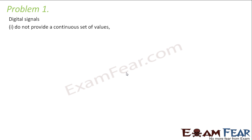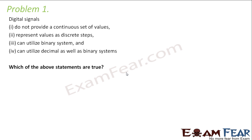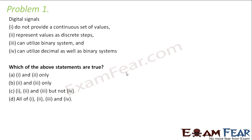Digital signals do not provide a continuous set of values, represent values at discrete steps, can utilize binary system, and can utilize decimal as well as binary systems. You have to tell which of the above statements are true. The first property — they do not provide a continuous set of values — is true, because digital signals only talk in respect of high and low values; they talk about either 1 or 0. So they do not provide a continuous set of values. Very true.